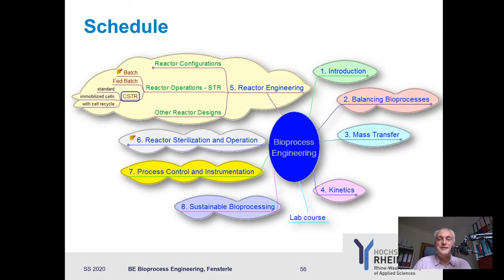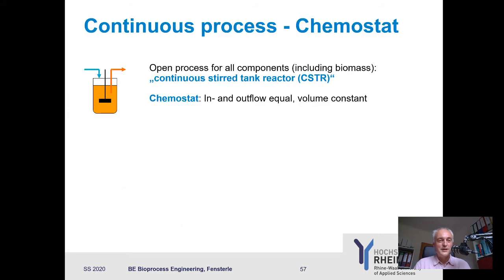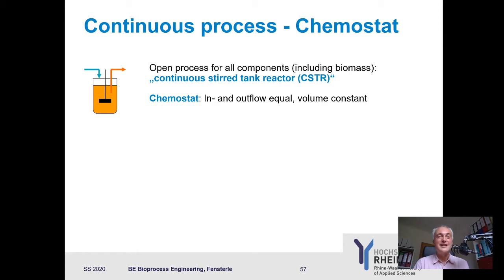Our continuous stirred tank reactor is open for all components, of course including biomass. So we can pump something in and pump something out. A special case is the chemostat, where our inflow and outflow are equal and therefore our volume is also constant. As soon as we have things which are constant, this makes us happy because solving differential equations gets easier. So what we talk about in the following part is the chemostat, which is the most common operation mode for a CSTR, as you can reach a steady state and in principle run it forever.